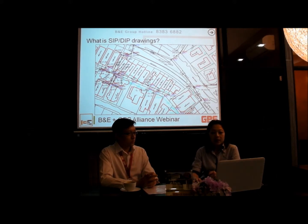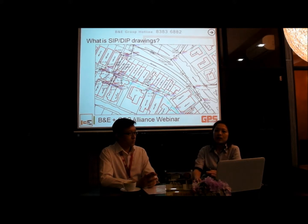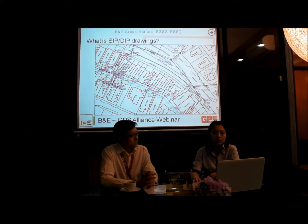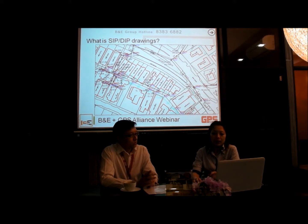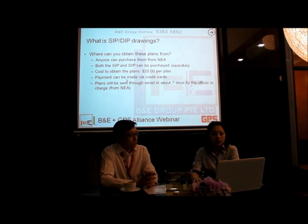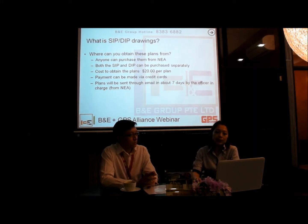Blue lines indicate unsurveyed sewage. Sometimes from the surface you can't even see whether there is a manhole or IC. All these lines that appear in the SIP are underground, and with this plan the planner, architect, or builder can propose what kind of extension is feasible for that area. These drawings can be purchased by anyone from PUB and they cost $20 per plan.